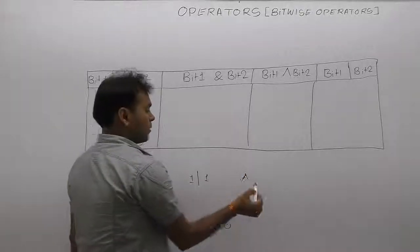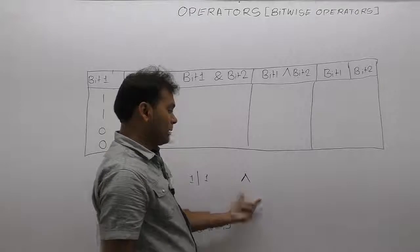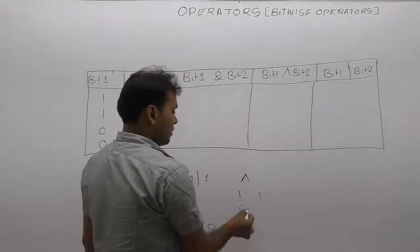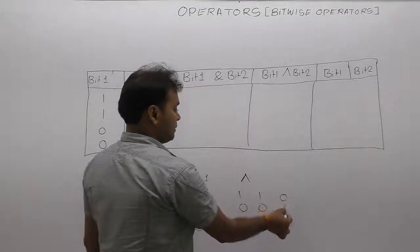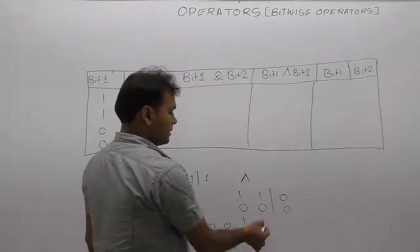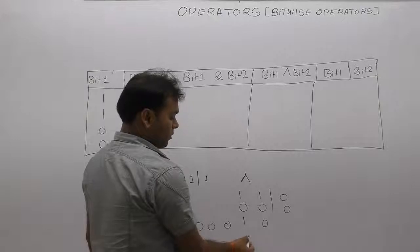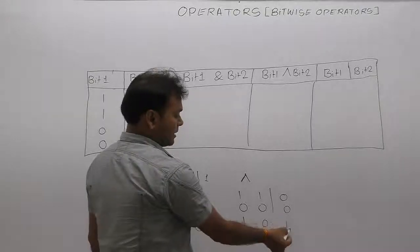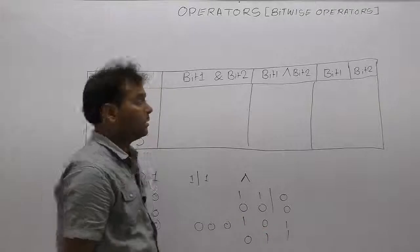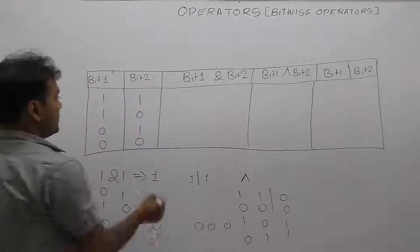In the case of XOR: if both bit values are the same — either one-one or zero-zero — the result is zero. If the first is one and the second is zero, or the first is zero and the second is one, the result is one. This is the concept of XOR.